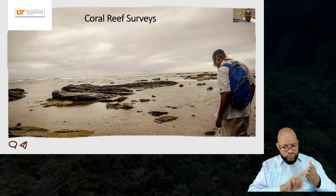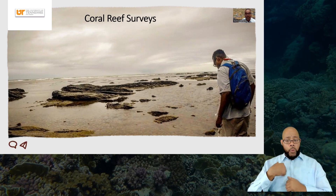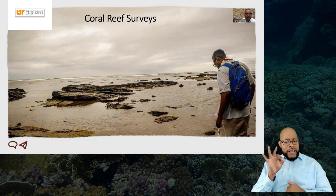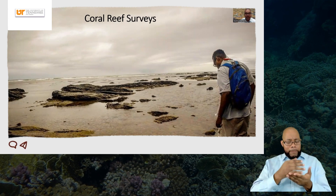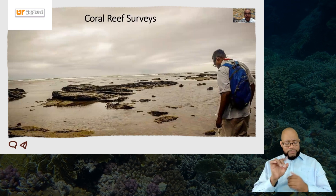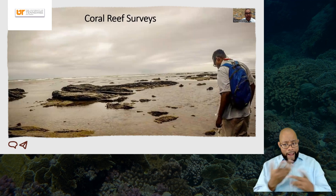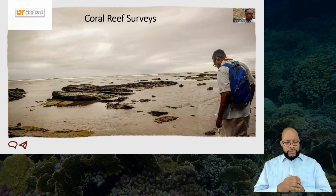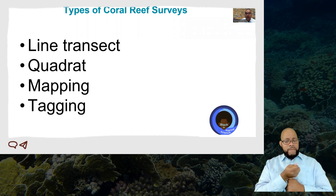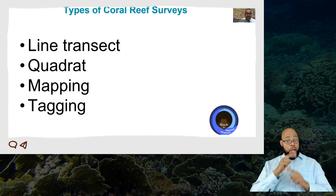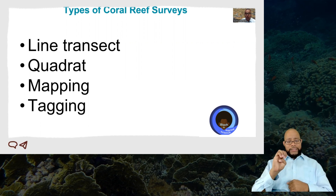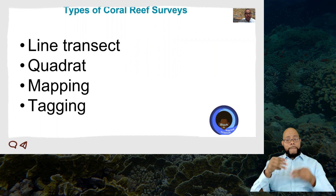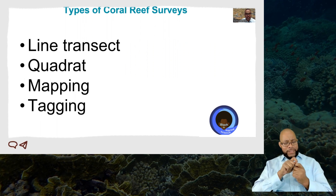There are many, many ways in which we do coral reef surveys. My curiosity was to find out what type of abundance in reef benthic species were there. So for this question, I had to figure out the best way to collect this data. I used the line transect method, quadrat method, mapping method, and the tagging method, all from the particular question I wanted to answer.